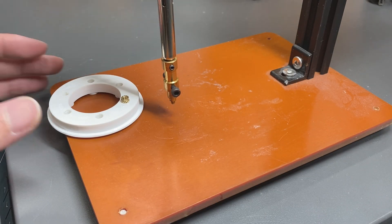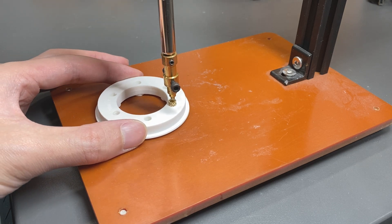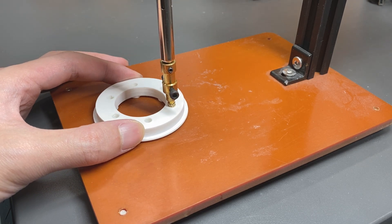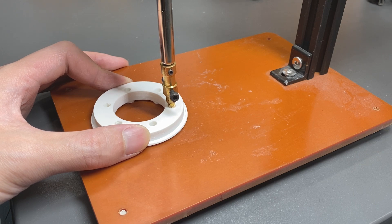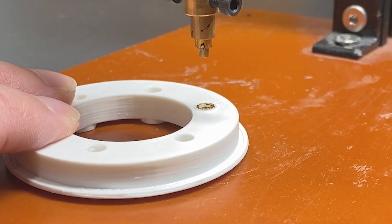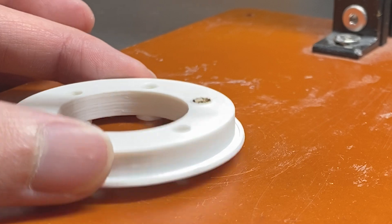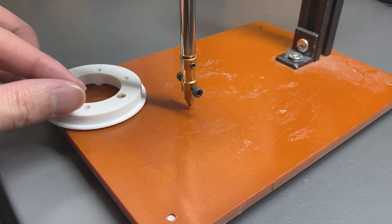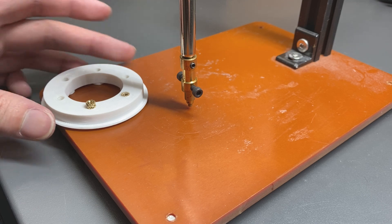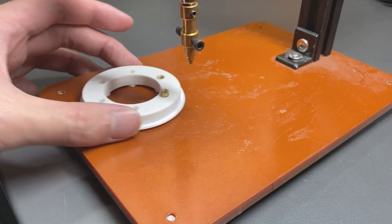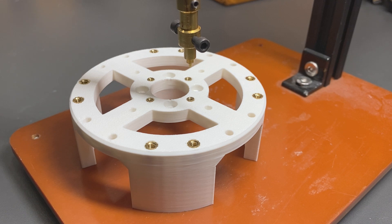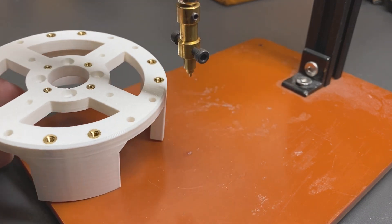Now, mount the heated insert into the 3D printed part with the insert press. Replace the tool head and do the same for the M2 inserts.